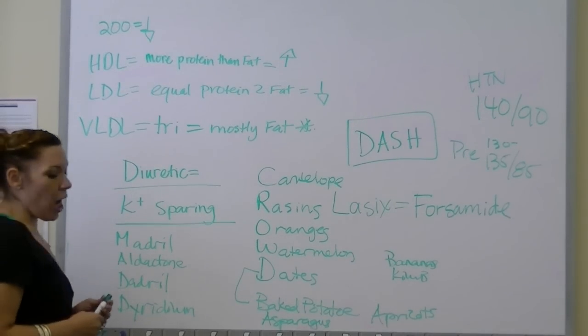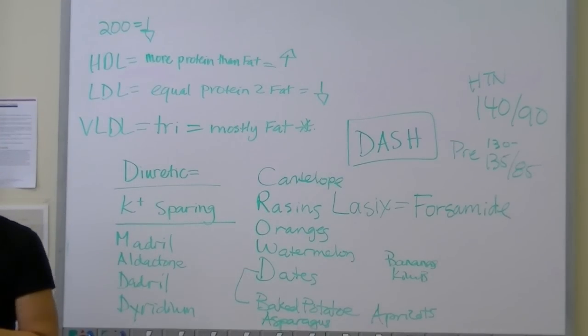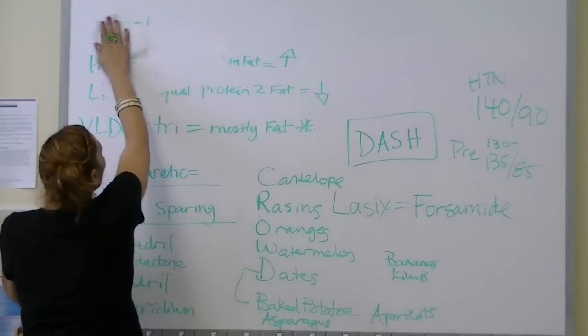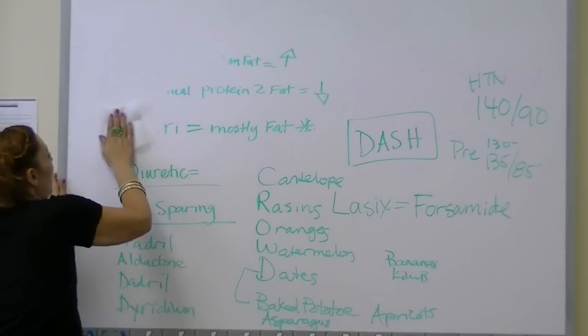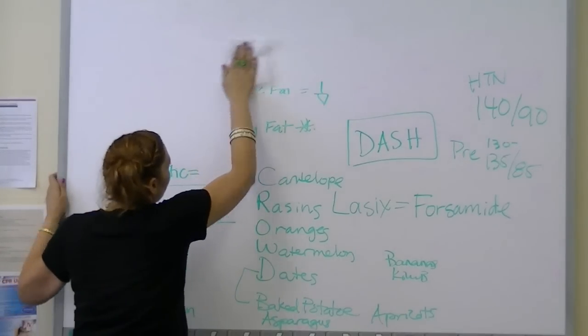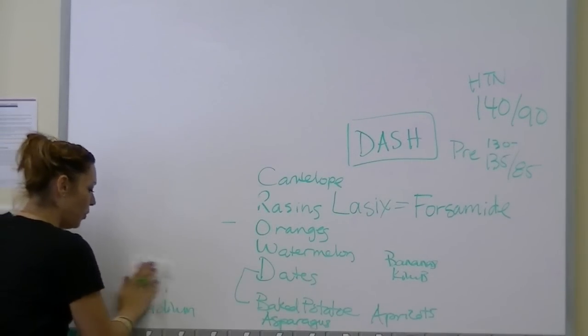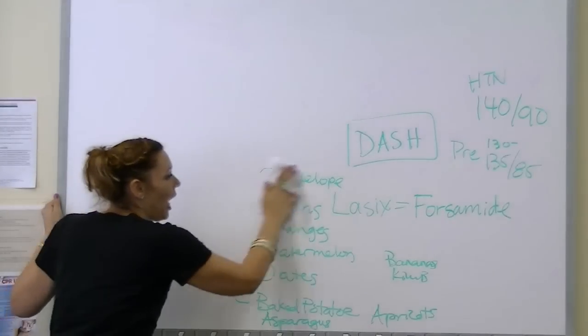Signs and symptoms of shock. What's the first tier of shock? First tier is agitation and restlessness, meaning they just don't know why they can't get comfortable. Well, guess what? It's because you're lacking oxygen. Then, second tier, a decrease in blood pressure and an elevation in heart rate.